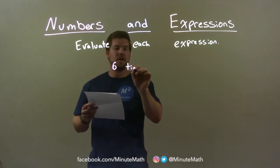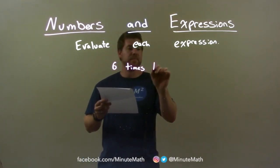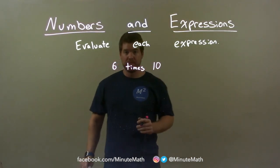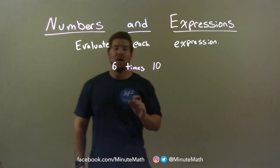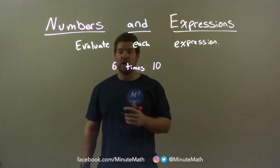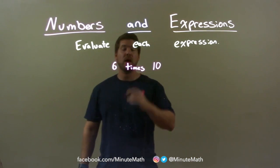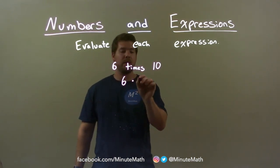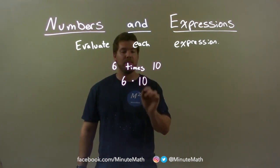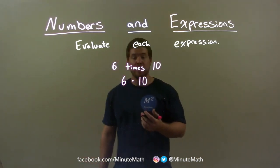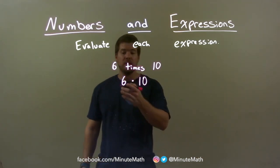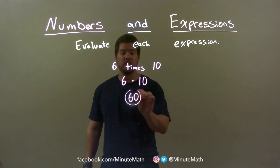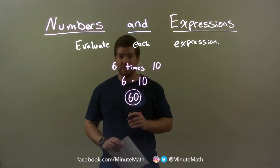6 times 10. So we have 6 times 10. I have to write that as an algebraic expression: 6 times 10 — 'times' means multiplication. So we have 6 multiplied by 10. This one's fairly easy — simplified, 6 times 10 is 60. Our final answer here is just 60.